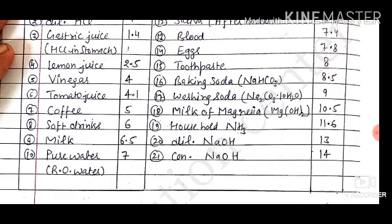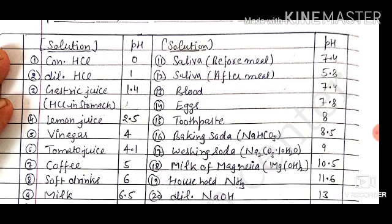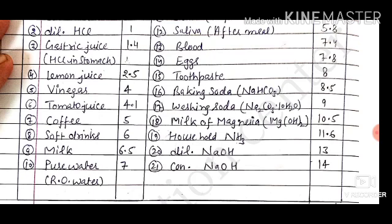Pure water is 7, saliva before meal is 7.4, saliva after meal is 5.8 — so saliva becomes acidic after eating. Blood is 7.4, eggs are 7.8, toothpaste is 8, baking soda is 8.5, washing soda is 9, milk of magnesium is 10.5, household ammonia is 11.6, dilute NaOH is 13, and concentrated NaOH is 14.